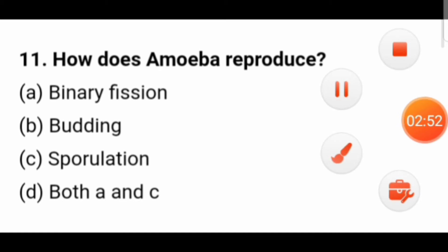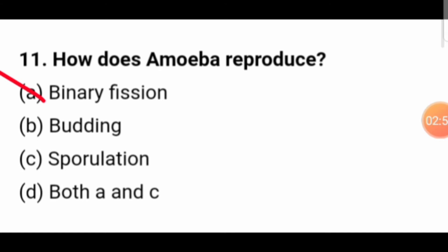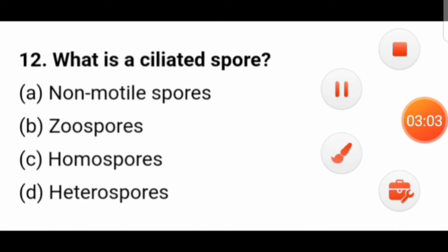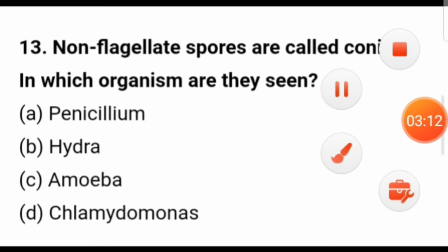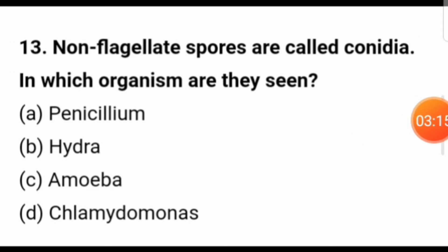How does amoeba reproduce? Amoeba reproduces by binary fission and by sporulation, so both A and C are the right answer. What is a ciliated spore? Ciliated spores are zoospores — motile zoospores. Non-flagellate spores are called conidia. Conidia are seen in penicillium.